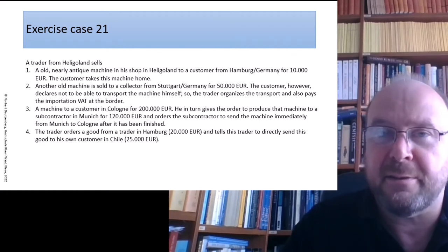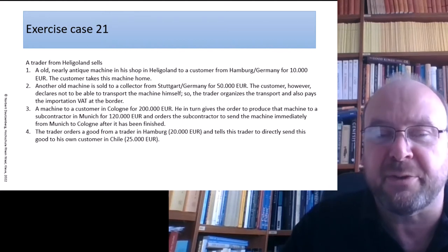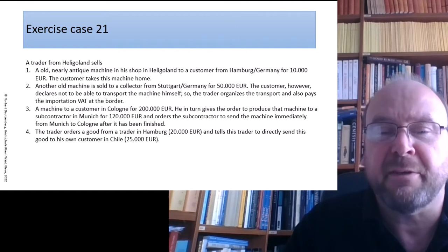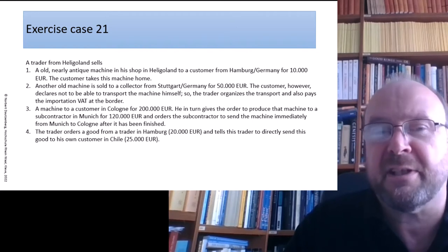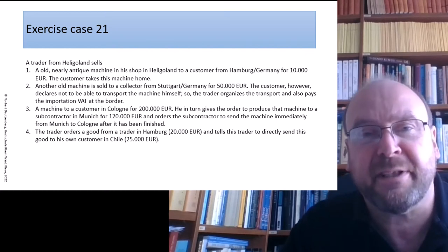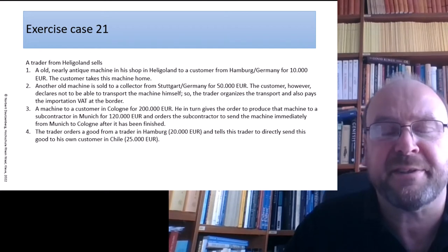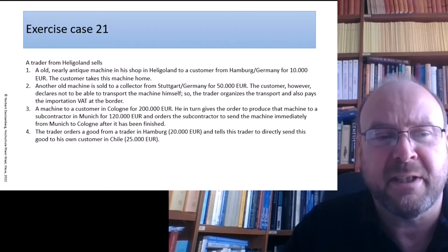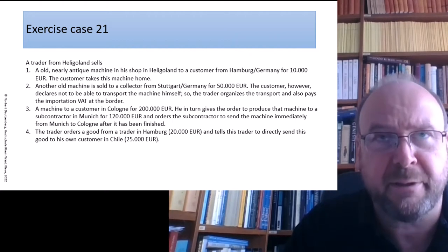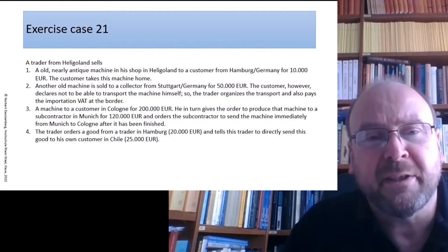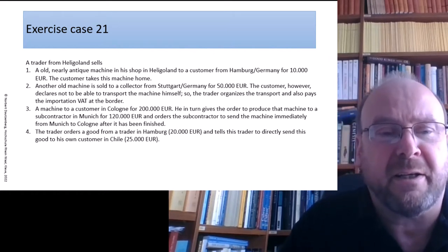That's part one of this case. Another old machine is sold to a collector from Stuttgart in the south of Germany for 50,000. The customer, however, declares himself completely unable to transport the machine himself. So the trader organizes the transport and also organizes the VAT declaration on the border of the mainland. Heligoland is a third territory, so if goods cross from Heligoland to the mainland, they are imported.